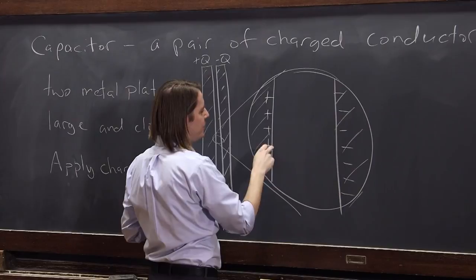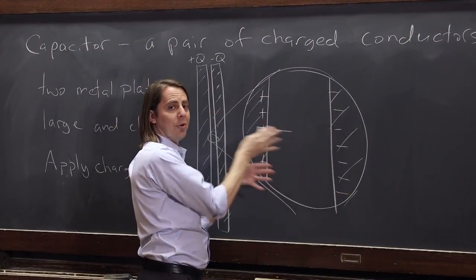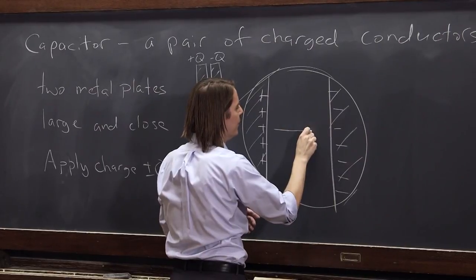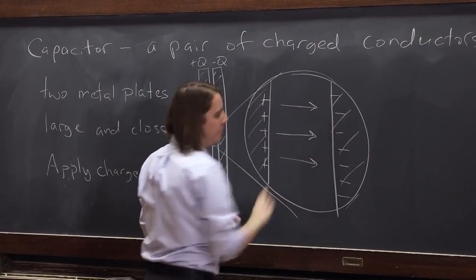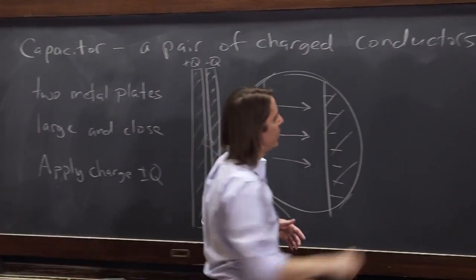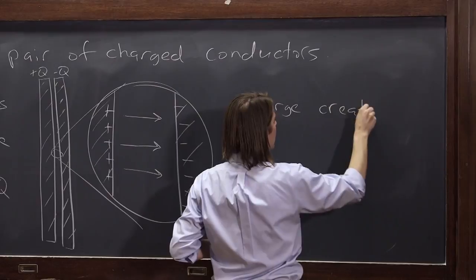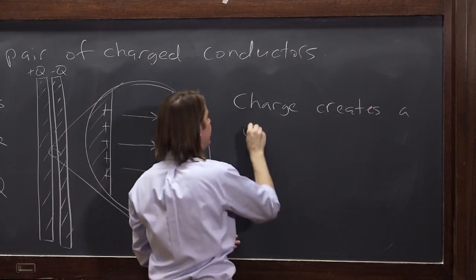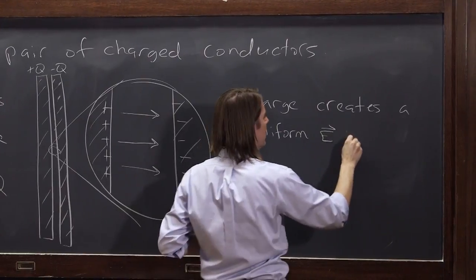So if that's the case, we know these positive charges are going to make a field that goes that way. And these negative charges are also a plane. They're going to make a field that goes that way as well. Those fields are just going to add. And what you'll get is the charge creates a uniform E field in the gap.